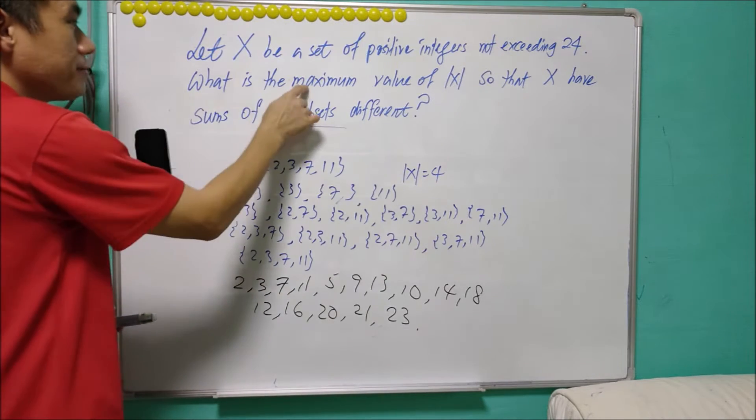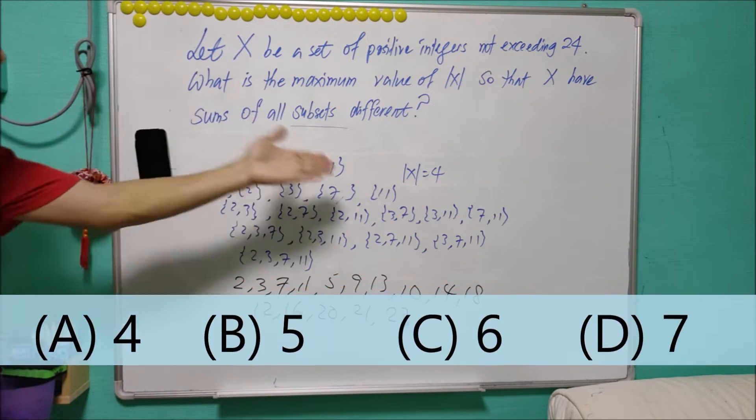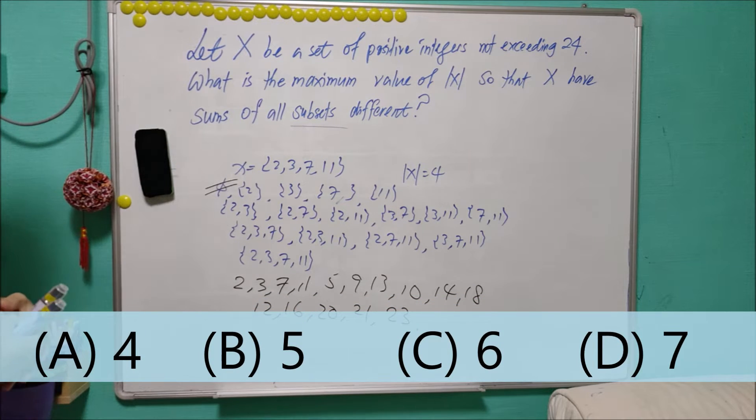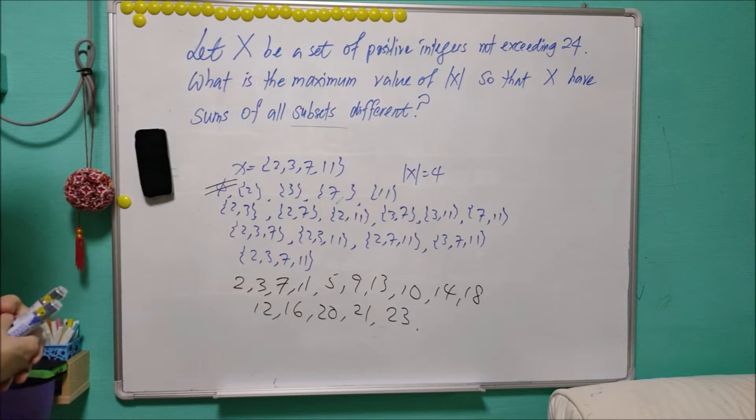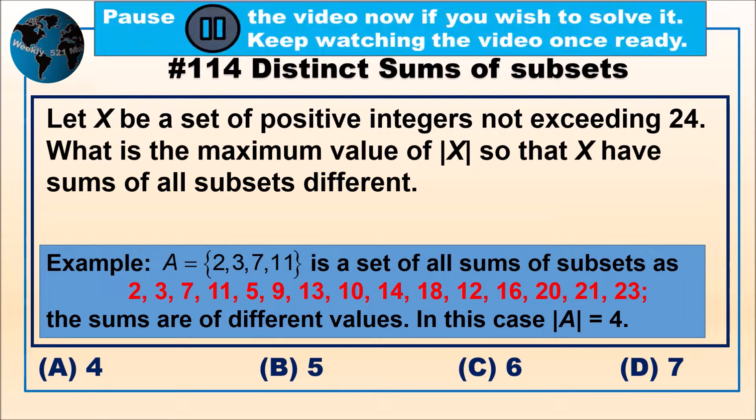So is 4 the maximum? The options for this question are A: 4, B: 5, C: 6, and D: 7. What do you think? Pause the video now if you wish to solve it. Keep watching the video once ready.